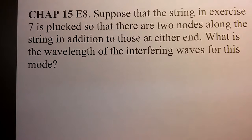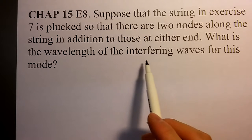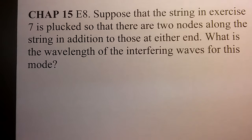Let's solve Chapter 15 E8. Suppose that the string in exercise 7 is plucked so that there are two nodes along the string in addition to those at either end. What is the wavelength of the interfering waves for this mode?